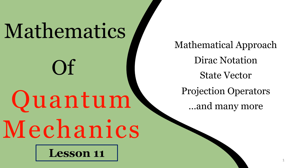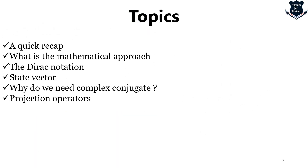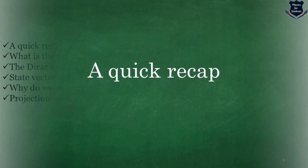Let us look at the topics we are covering today. First we will take a quick recap, because it is important to understand what we have learnt earlier. We are also going to look into something new, which is called a mathematical approach of quantum mechanics. We will look in depth into the Dirac notation, understand what is a state vector in QM and its implications, and also cover the importance of complex conjugate and projection operators.